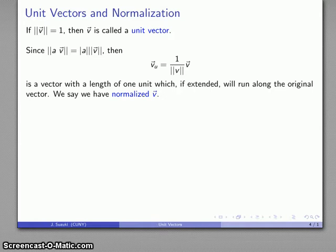And the useful term here is that we say that we have normalized v. So we have our original vector v, which might or might not be a unit vector, but by normalizing it, I have converted it into a vector which has a length of 1.